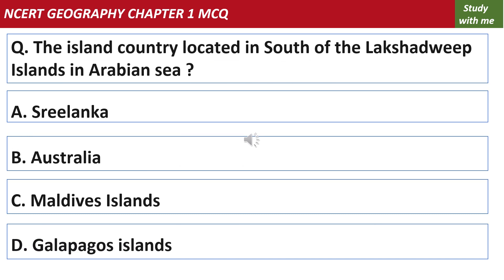Which island country is located to the south of the Lakshadweep Islands in the Arabian Sea? The answer is the Maldive Islands. The Maldive Islands are located in the Arabian Sea.